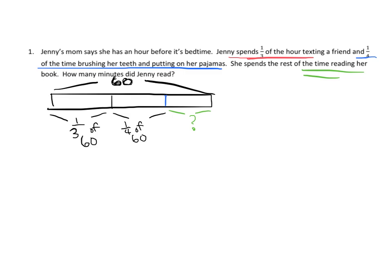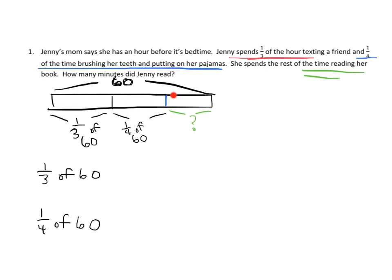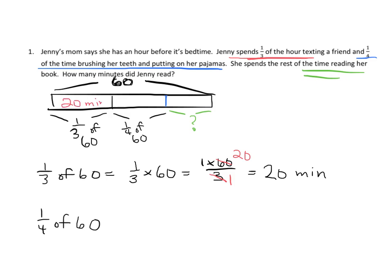We're going to figure out what one-third of 60 minutes is, then one-quarter of 60 minutes, and use subtraction to find what's left over. One-third of 60 is one-third times 60, which equals one times 60 over 3. Since 60 and 3 are both divisible by 3, 60 divided by 3 is 20 and 3 divided by 3 is 1 — so that gives us 20 minutes. This piece right here is 20 minutes.